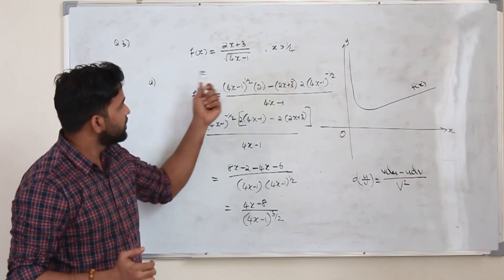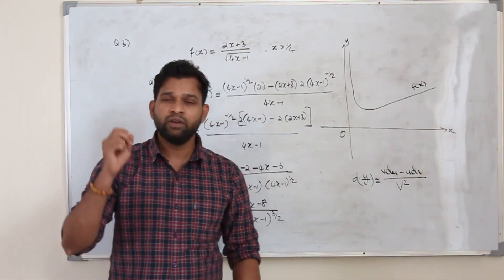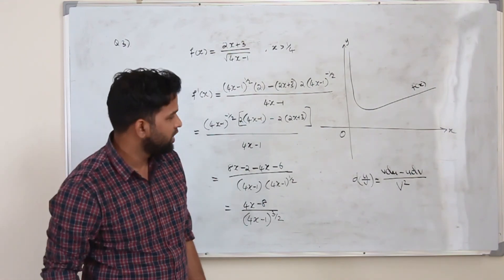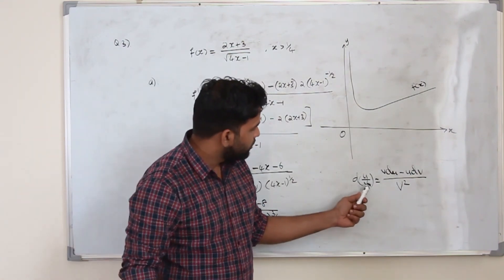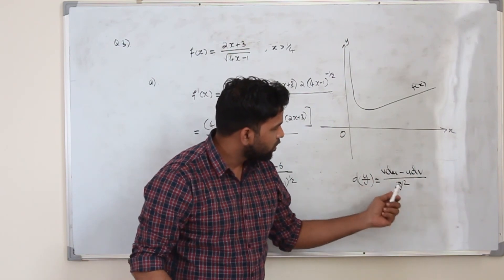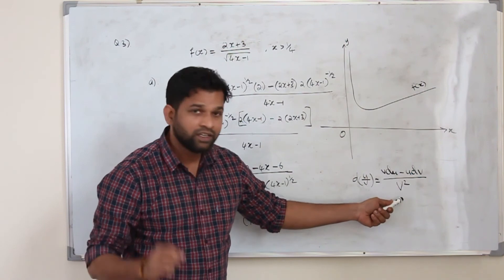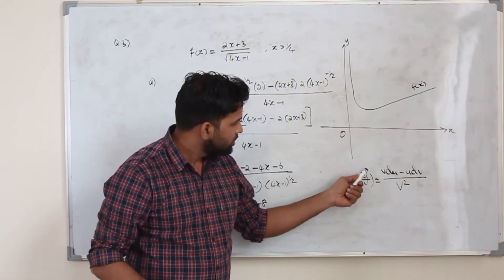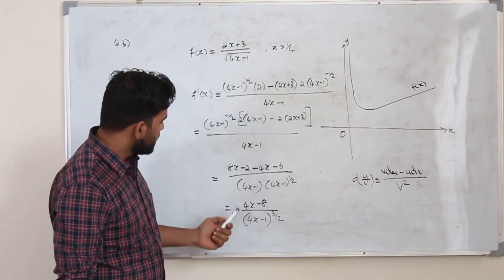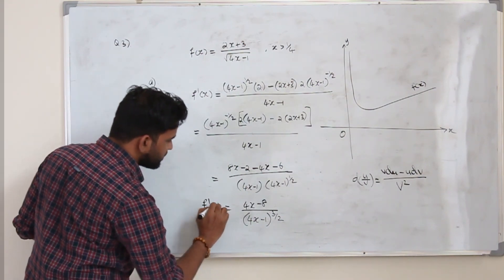To summarise differentiating this function: you need the quotient rule. When you have a function in the form u/v, the derivative is (v·du − u·dv) / v², where v is the denominator and u is the numerator. This gives us the first derivative f′(x).